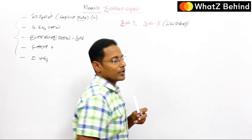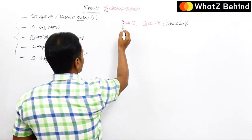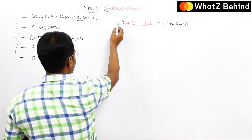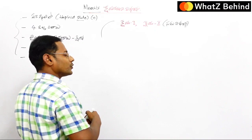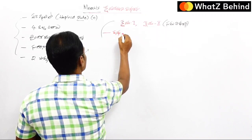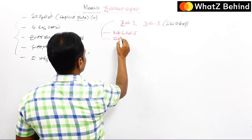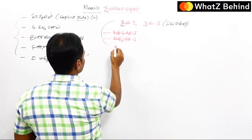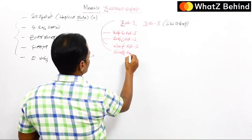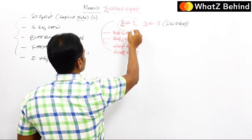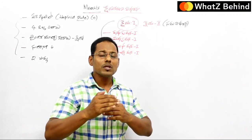Kshaykarana vibajana (meiosis) has two stages — just like sama vibajana (mitosis) has four phases: prophase, metaphase, anaphase, and telophase involving the nucleus and cytoplasm. Similarly, meiosis I has four phases: Prophase I (pradama dasha one), Metaphase I (madhya dasha one), Anaphase I (chalana dasha one), and Telophase I (anthya dasha one).